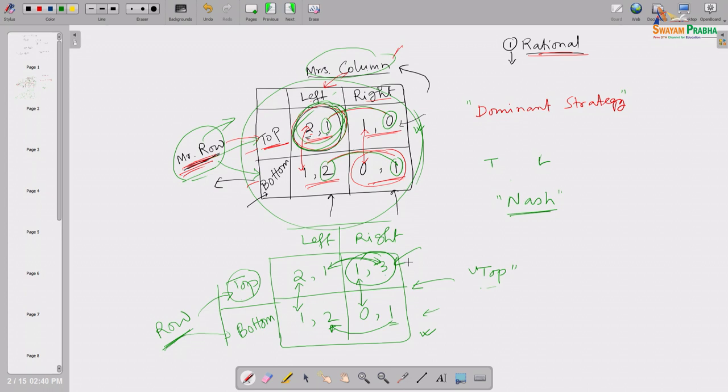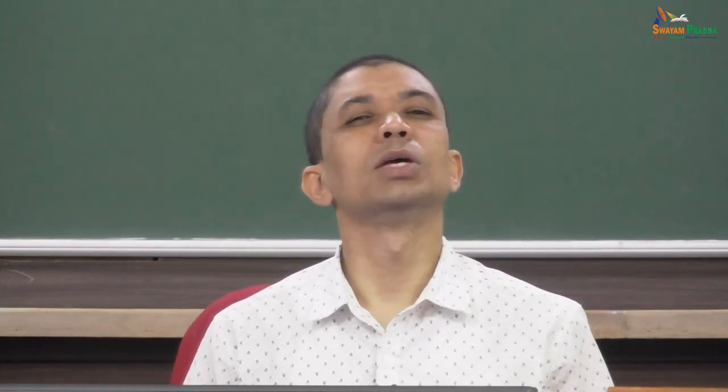So the equilibrium in this case is top-right. This is also a Nash equilibrium, which requires some specific conditions to be satisfied — we will come to that definition. If both players have a dominant strategy, the intersection is the equilibrium. If at least one of them has a dominant strategy, a single equilibrium is still guaranteed — through the logic that everyone is rational and I know you are rational, you know I am rational.